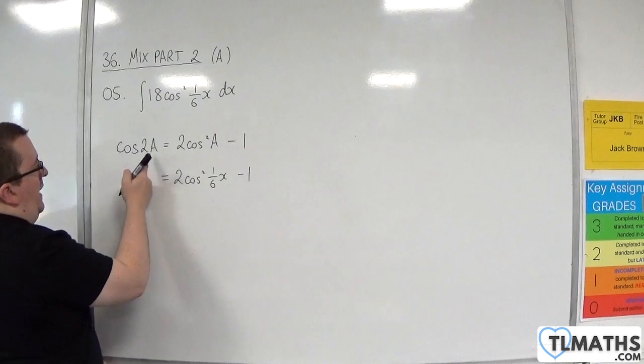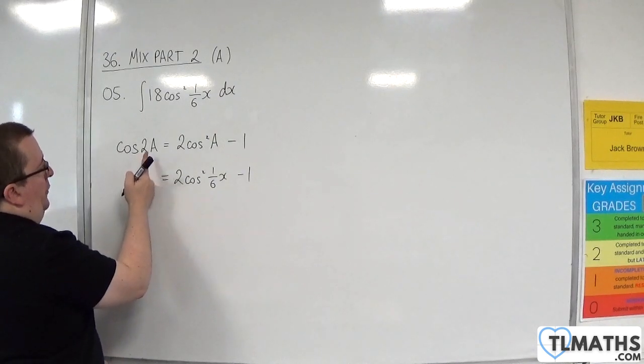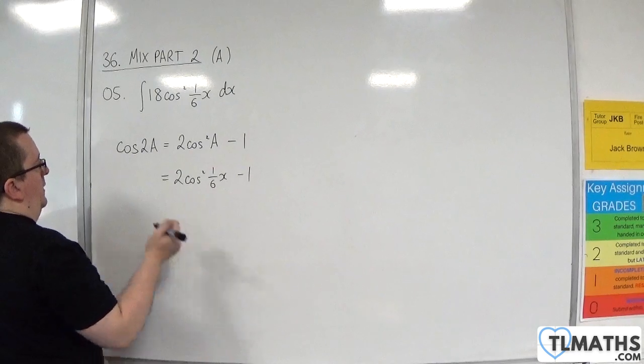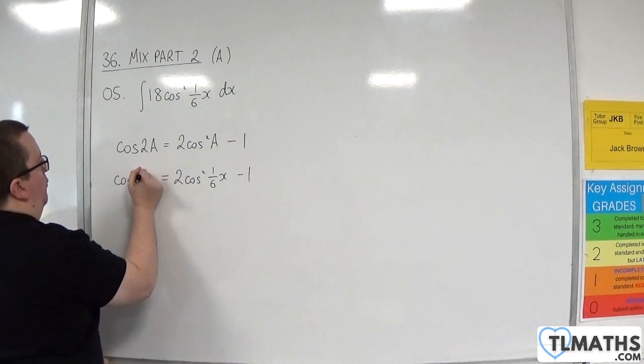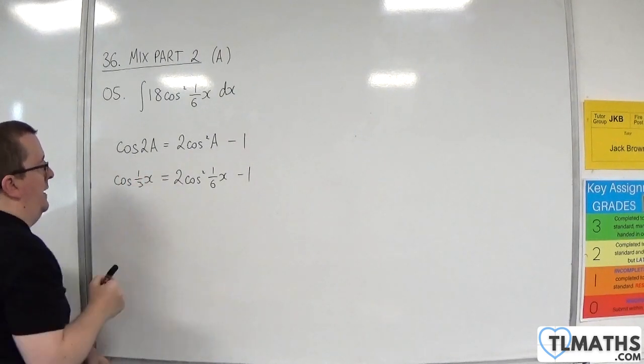Now, if a is one-sixth x, then we've got two lots of one-sixth x, which is one-third x. So, cosine of one-third x is equal to that.